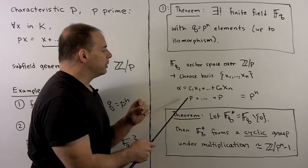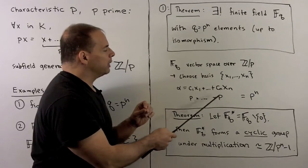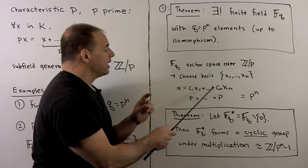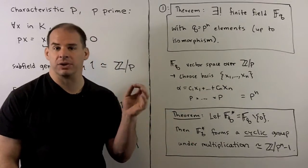Now, if we start counting elements, we have p choices for c1, p choices for c2, all the way up through p choices for cn, and then we just multiply. That gives p to the n choices for elements in F_q.